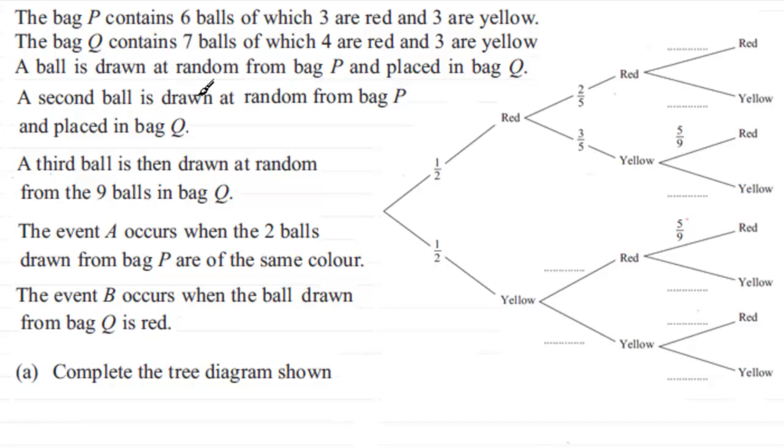And then a second ball is drawn at random from bag P and placed in bag Q. And finally, a third ball is then drawn at random from the nine balls in bag Q. Now, we've got a couple of events defined here, A and B, but we don't actually need them in this particular part of the question. We've just got to complete the tree diagram shown.